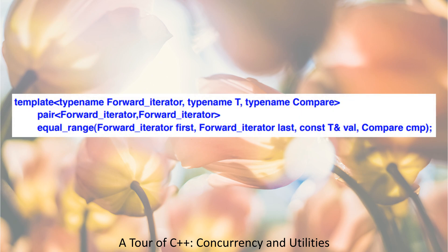template<typename ForwardIterator, typename T, typename Compare> pair<ForwardIterator, ForwardIterator> equal_range(ForwardIterator first, ForwardIterator last, const T& val, Compare cmp);